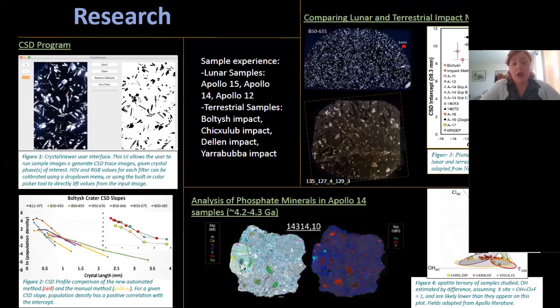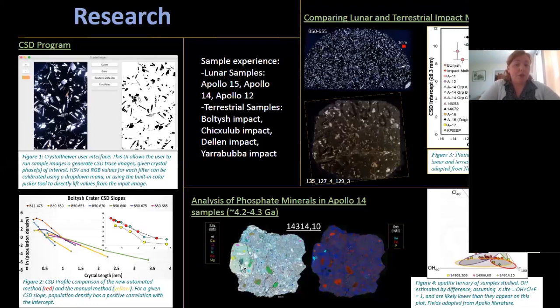I've worked with lunar samples from Apollo 15, 14, and 12, and with terrestrial samples from the Baltish, Chicxulub, Dallin, and Yoruba impacts. I'm using all of these samples for another project comparing lunar and terrestrial impact melts. Sample B5655 is one of the Baltish impacts I've studied, and 135127 is a Chicxulub sample. In Figure 3, we've plotted plagioclase CSDs for both lunar and terrestrial impacts. The goal is to use the automated CSD program to create a large database of lunar and terrestrial impact melts to compare and see if there are any similarities and things we can learn from these two different impact fields.